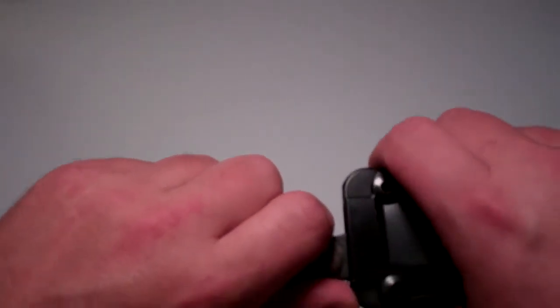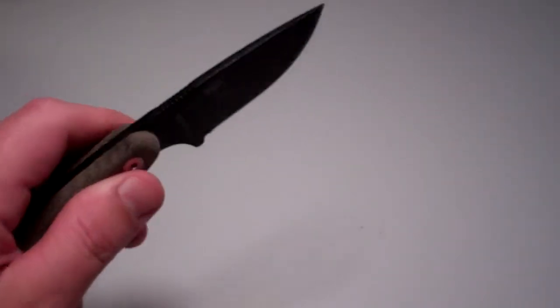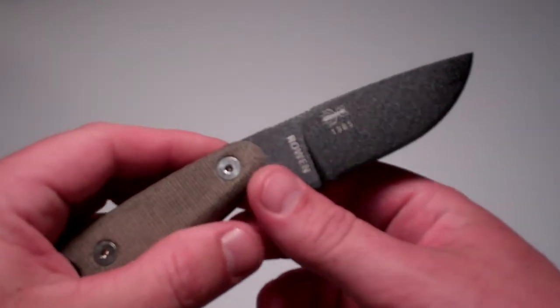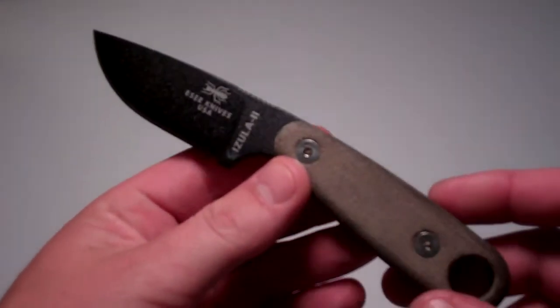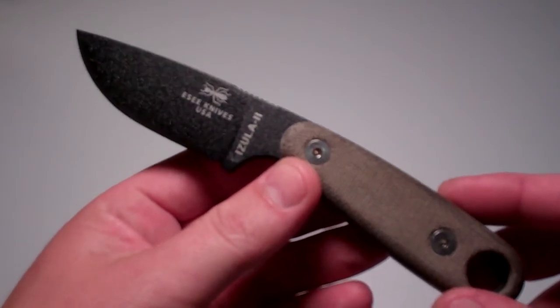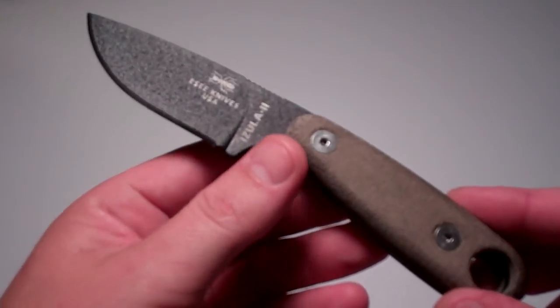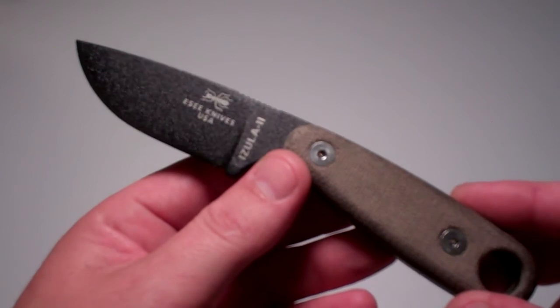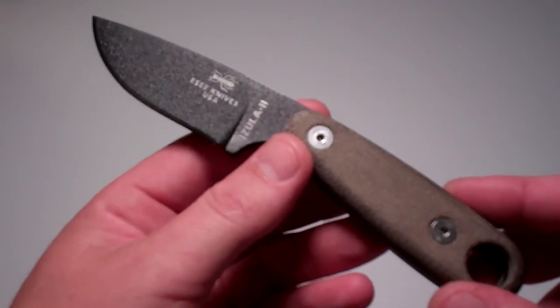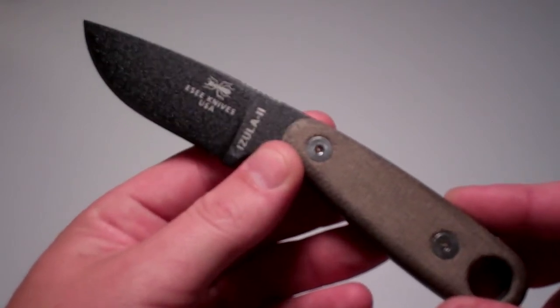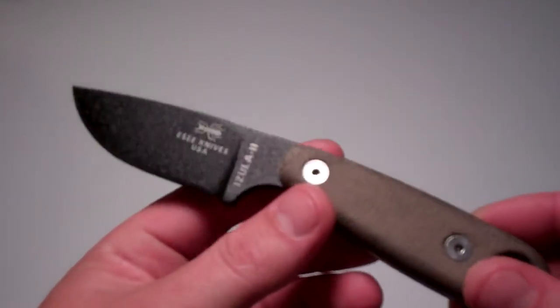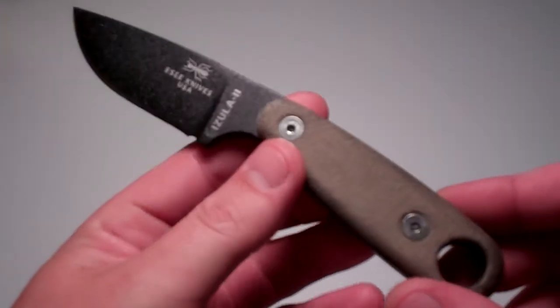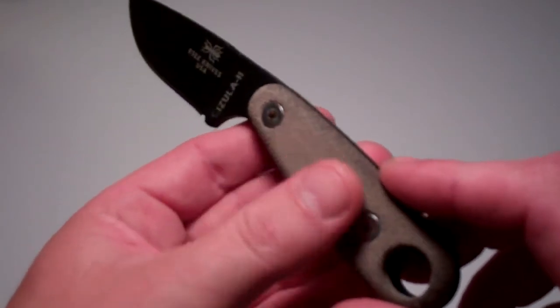Next, my second favorite would be my Essec Azula 2. Overall it's 6 3 quarters inches, with the blade being about 2 3 quarter inches. The weight is 3.2 ounces, it's 1095 steel, and it's got real nice canvas micarta handles.